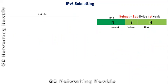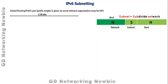Subnetting means subdividing a network. In IPv4, the 32-bit address was divided into a network part and a host part, and during subnetting we borrowed bits from the host portion to create subnets. In IPv6 we don't have a subnet mask; we have 128 bits, and from those bits we get the global routing prefix information from the ISP.